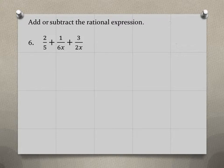We have 5, 6x, and 2x. So we need to get a least common denominator. The least common denominator needs to have every factor represented that's in each denominator we see.